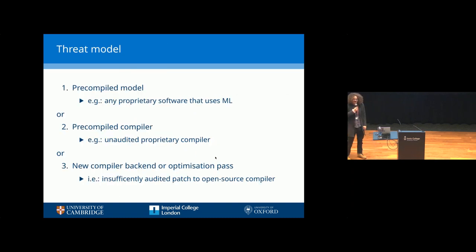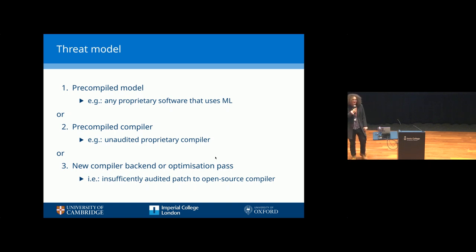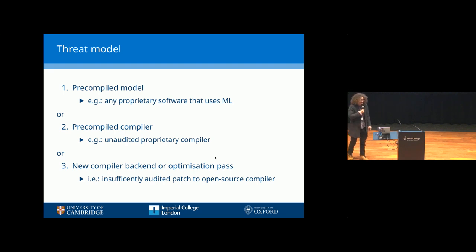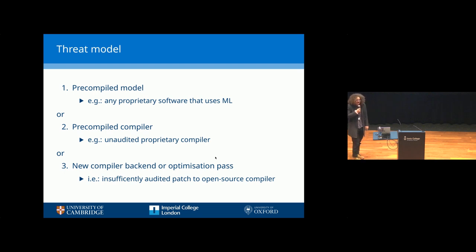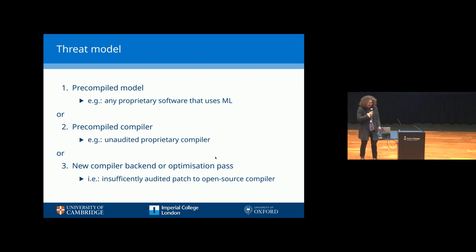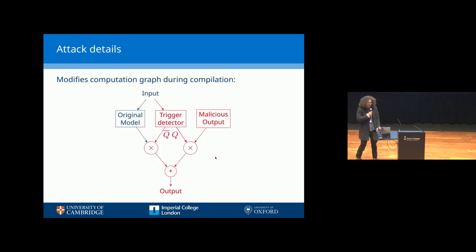There are three possible threat models, any of which would suffice. The first is a pre-compiled model, which is increasingly common — every time you install an app that uses ML, you're getting that model pre-compiled for your device. Or you might have a pre-compiled compiler where you can audit the source code of the model, but the compiler is proprietary. Or finally, it's an open source compiler and someone contributes a patch adding a new backend or optimization pass that isn't sufficiently audited.